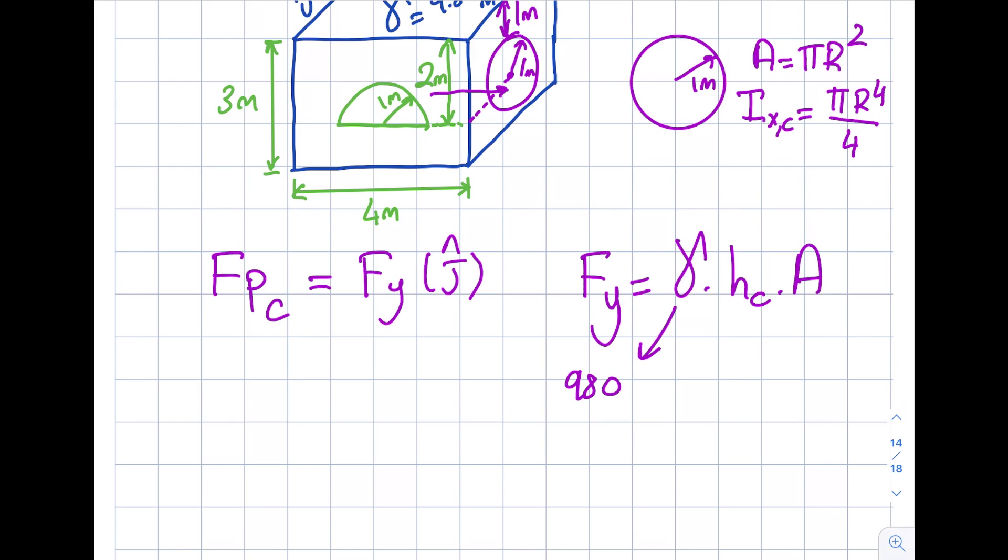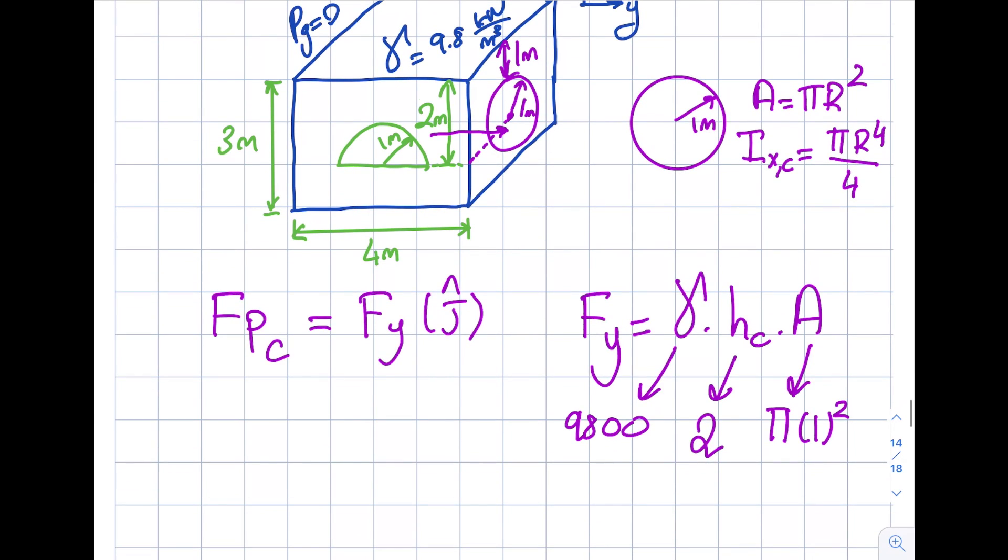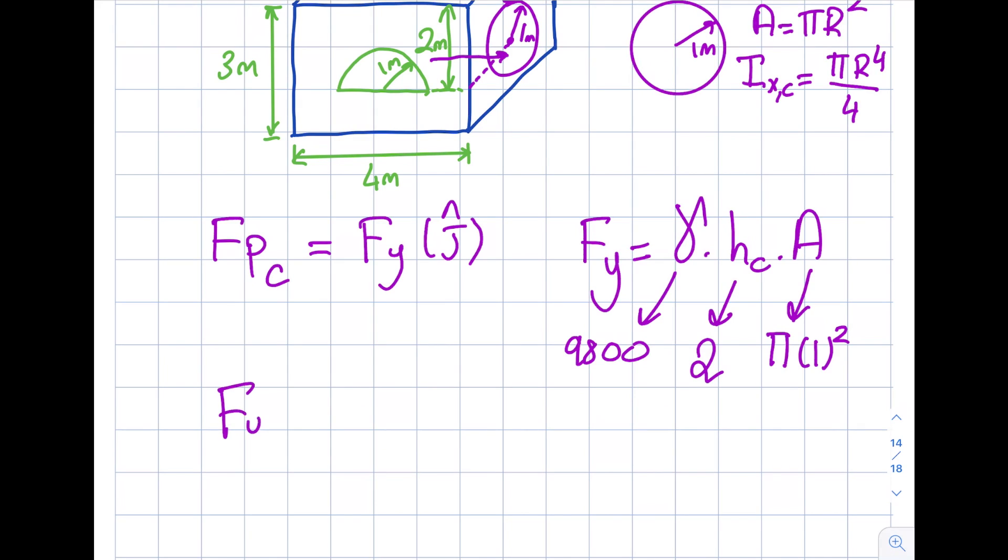So basically what I'm going to do in here is I will find like this, the specific weight times hc times the A. Specific weight is 9800. What is hc? Well, let's take a look. So from surface I go down one meter and then in order to obtain the centroid of the circle which is at the center, this is one more meter. So this whole thing is two meters. So that will be two meters. How about the area? That's going to be πr², but r is 1. So I got myself 9800 times 2 times π. If I go ahead and calculate this I will get myself Fy as 61,575 Newtons.